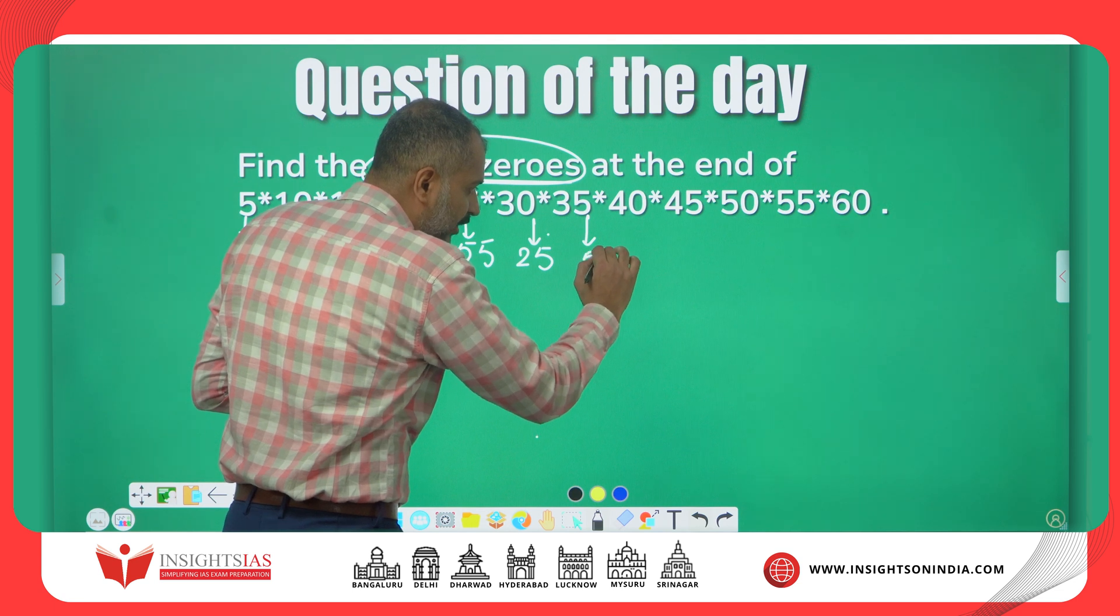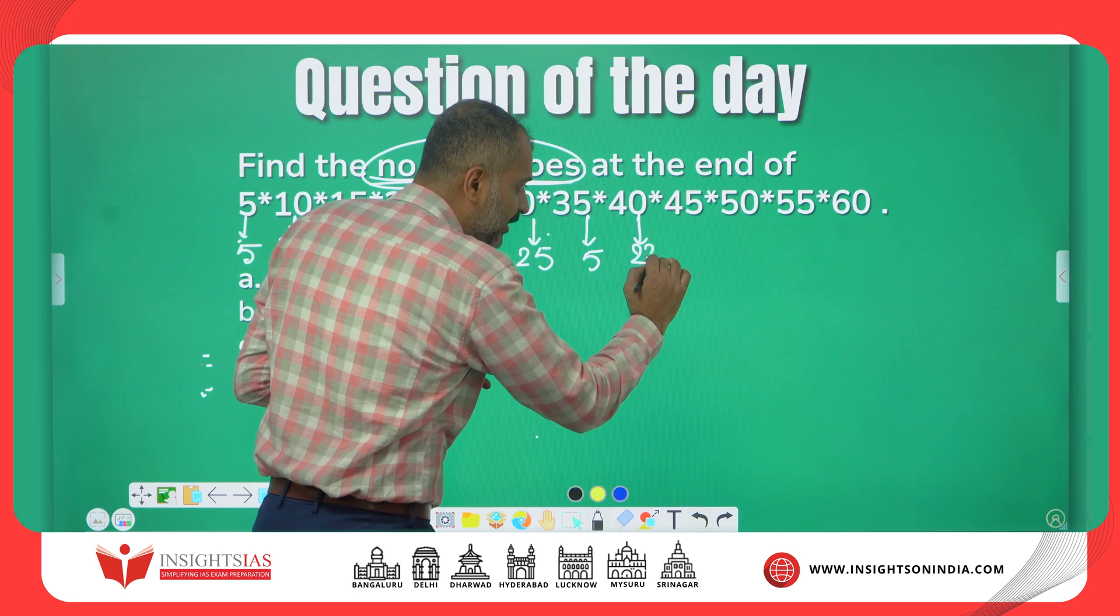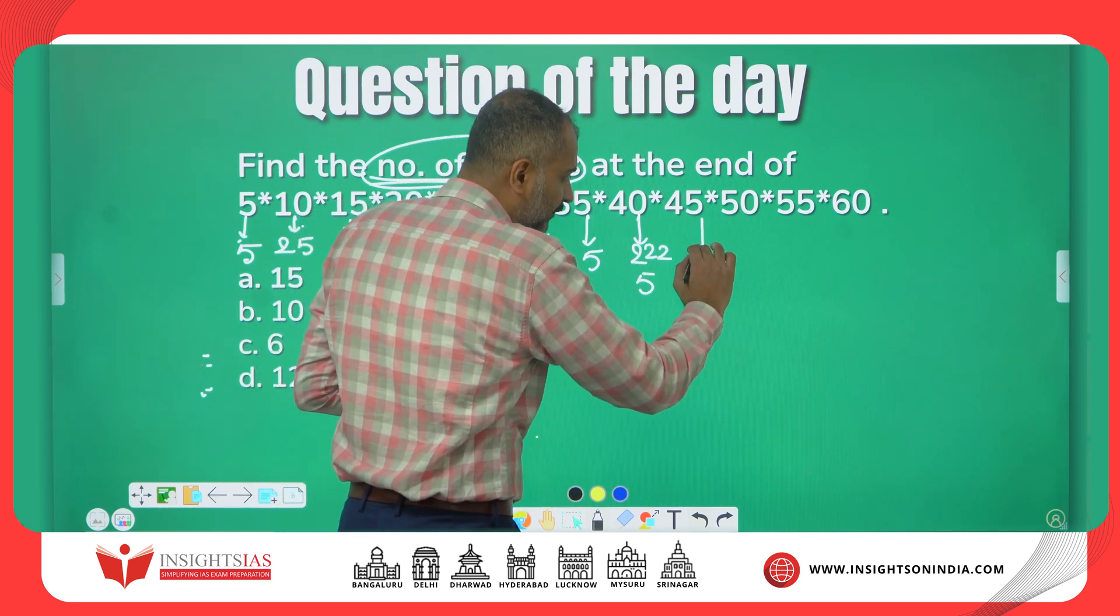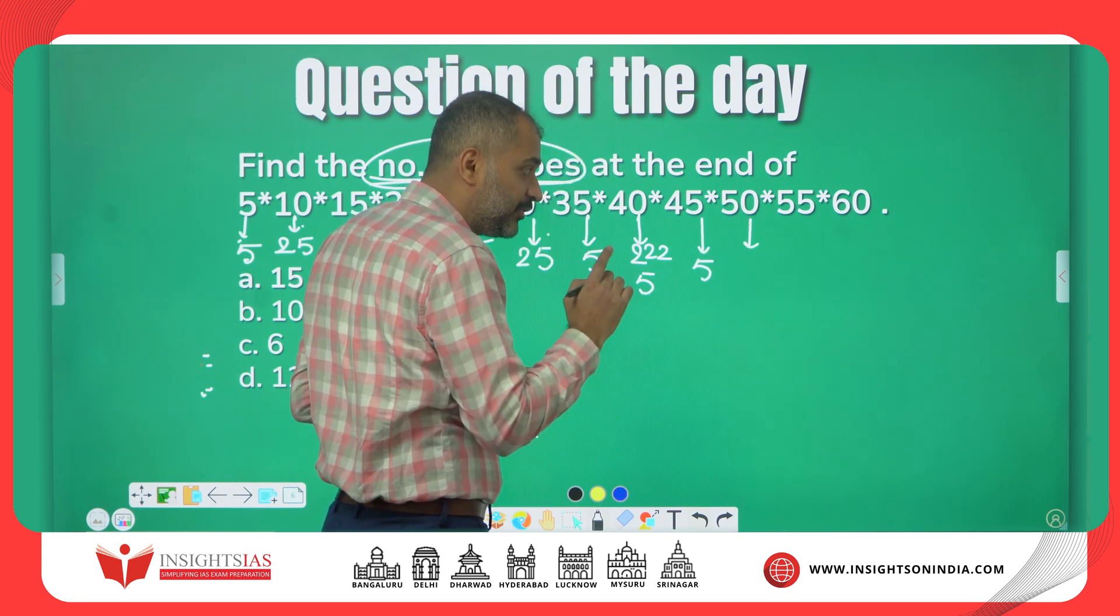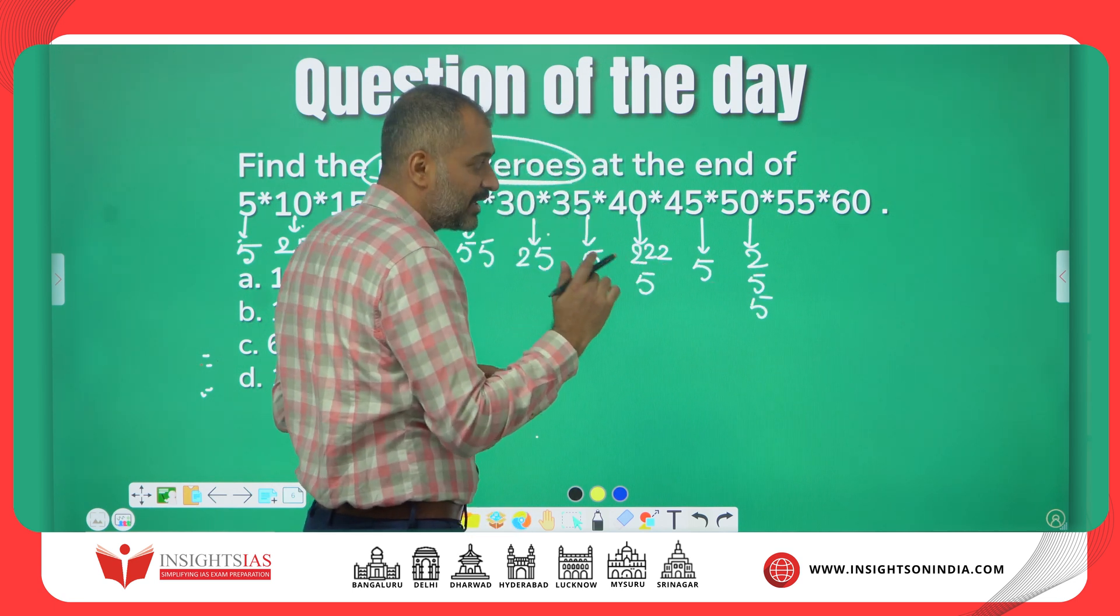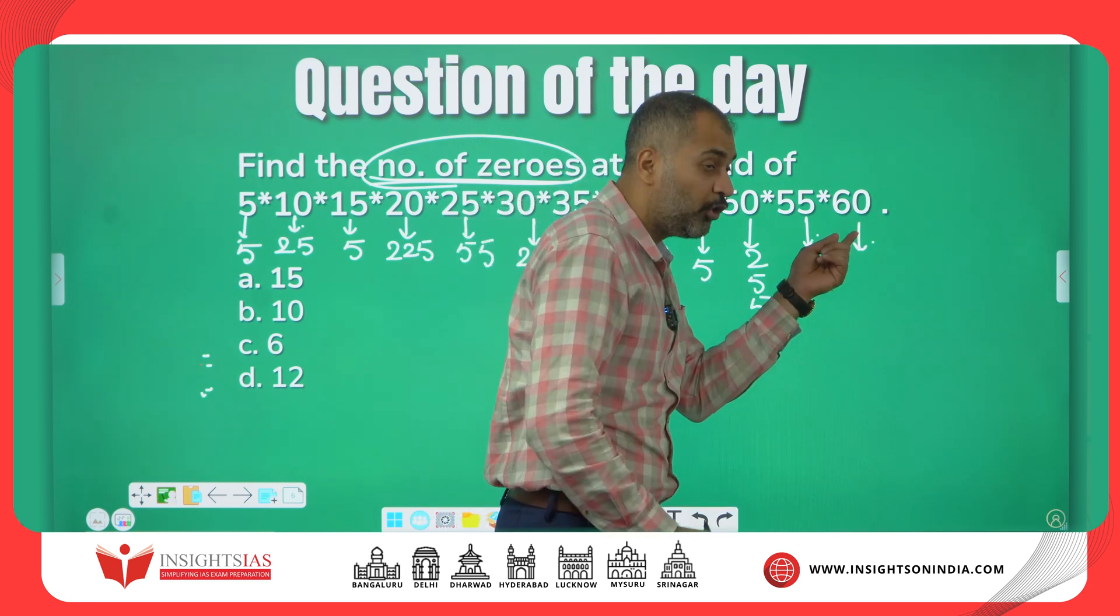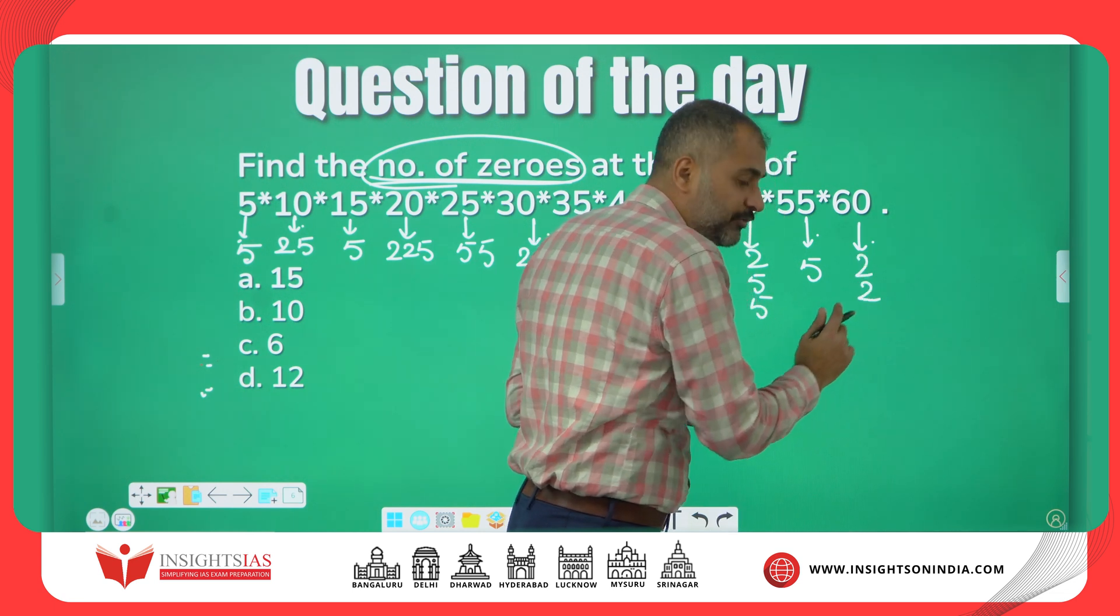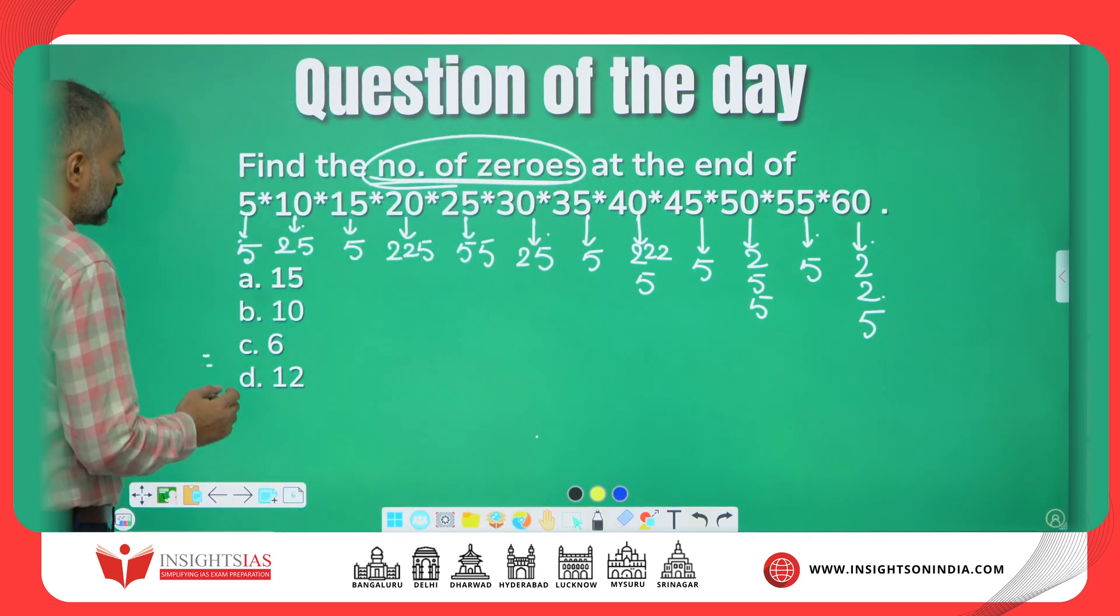Similarly, 35 is 7×5; 7 we don't want, 5 I'll take. 40 is 8×5, 8 means 3 twos and a 5. 45 is 9×5; in 9 we don't have 2, hence I am taking only 5 here. 50 means 2×5×5, so 1 two and 2 fives. 55, only 1 five; another one is 11. In this case, 60 is 4×15, 4 is 2 twos, 15 is 3×5, but 3 we don't want, only 5.